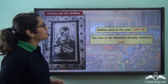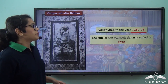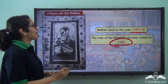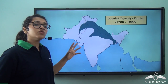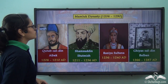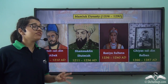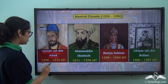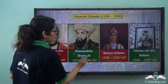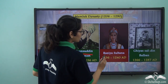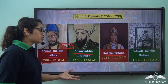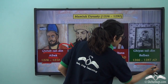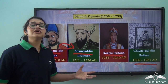Balban died in 1287 CE and with him the rule of the Mamluk dynasty effectively ended in 1290. To summarize, the Mamluk dynasty had four famous rulers: it was started by Qutubuddin Aibak in 1206, followed by his son-in-law Shamsuddin Il Tutmish, then Razia Sultan — the first and last female ruler — and finally Giyasuddin Balban, with whom the Mamluk dynasty came to an end.